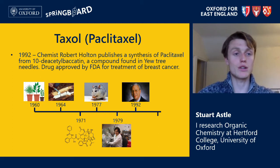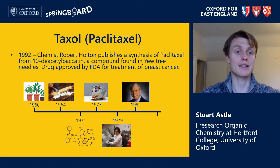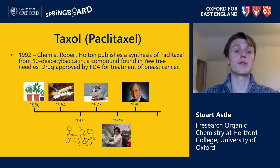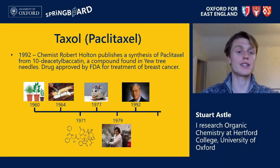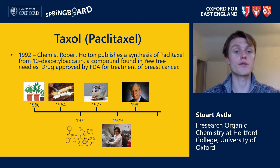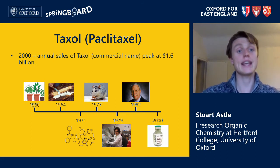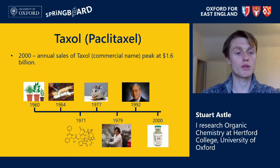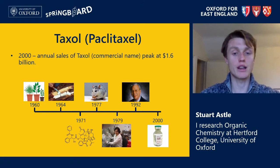It was a huge breakthrough in 1992 when chemist Robert Holton published a synthesis of paclitaxel from another natural product intermediate called 10-deacetyl-baccatin. Whereas paclitaxel could only be isolated from the bark of a Pacific yew tree, deacetyl-baccatin could be isolated from yew tree needles, which simply fall off the tree — so it can be sustainably resourced. It only took Holton a couple of small modifications to convert deacetyl-baccatin into paclitaxel. After this sustainable synthesis was developed, the drug was approved by the FDA for the treatment of breast cancer, and by 2000 the annual sales of Taxol had peaked at 1.6 billion US dollars per year.